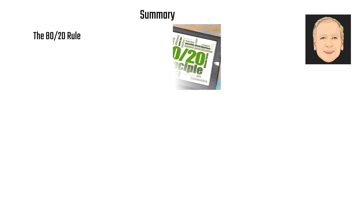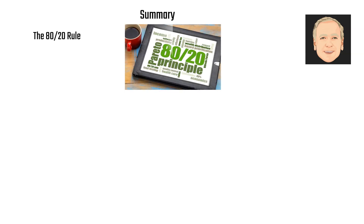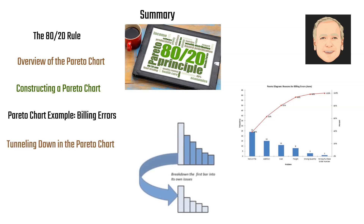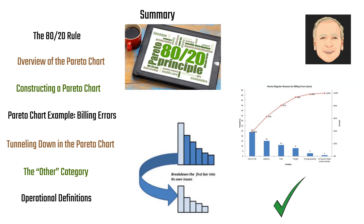In summary, we looked at the 80-20 rule, did an overview of the Pareto chart, discussed how to construct one, examined examples including billing errors, talked about how to tunnel down, the other category, and operational definitions.